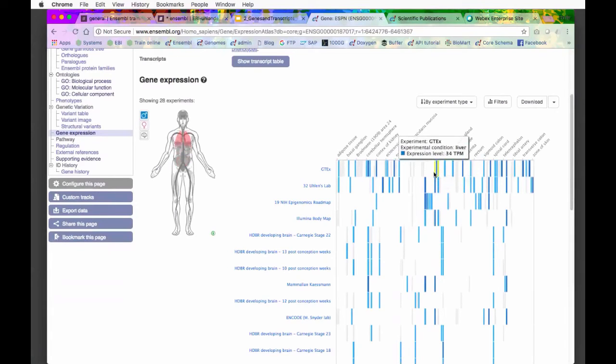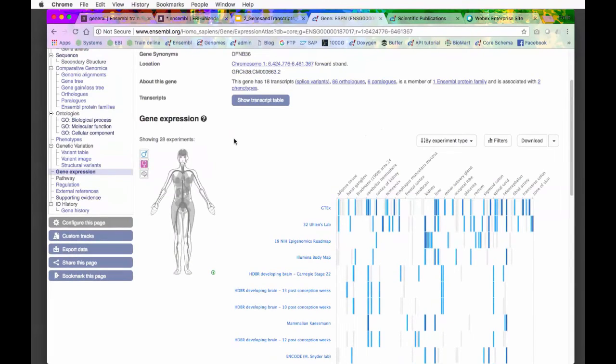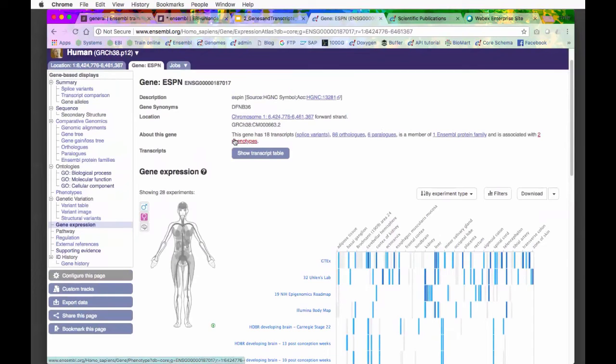We can see we've got a little body here. We can see the expression levels in different tissues from different experiments. If I hover over them, if I hover over the kidney, you can see that the kidney lights up in our little widget. If you're working with sex-specific tissues, you may want to switch it from a man to a woman for that reason.